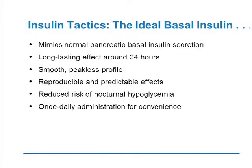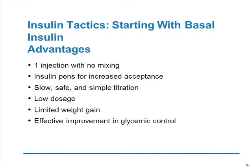The ideal basal insulin would mimic normal basal pancreatic secretion: a little bit every nine minutes, or a flat line. It should be long-lasting around 24 hours, with a smooth, peakless profile. It should be reproducible with predictable effects, reduce the risk of nocturnal hypoglycemia, and be convenient as once-daily dosing. With the advances in pens, this has become very easy to do.